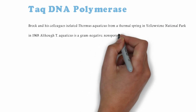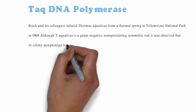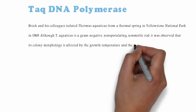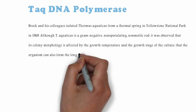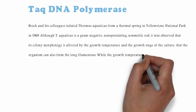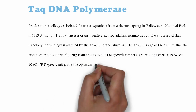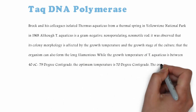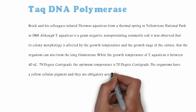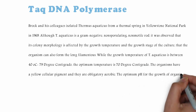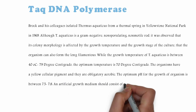Thermus aquaticus is a gram-negative, non-sporulating, non-motile rod. It was observed that its colony morphology is affected by the growth temperature and the growth stage of the culture, and that the organism can also form long filamentous structures. The growth temperature of Thermus aquaticus is between 40°C to 79°C, with an optimum temperature of 70°C. The organisms have a yellow cellular pigment and they are obligatorily aerobic.